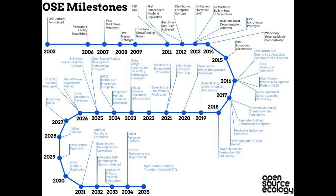Next milestone, starting in 2016 but completing in 2017, is the replicable building construction enterprise. We're starting the Open Building Institute for replicable open source housing — that's a big initiative. We're looking at running a Kickstarter probably in June on this. Next thing for 2017: replicable agriculture enterprise.